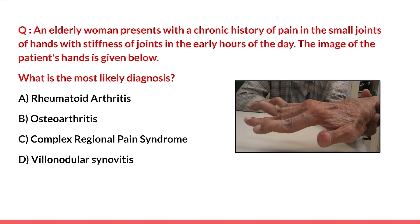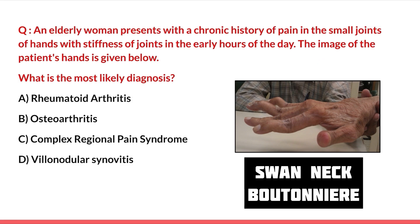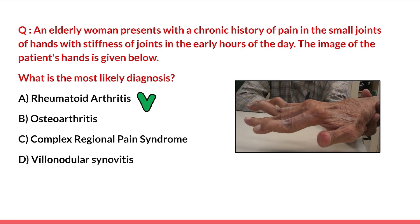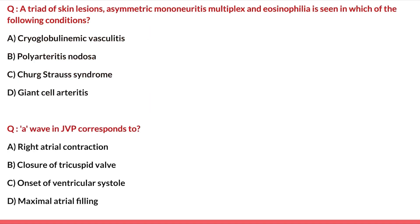The first question: an elderly woman presents with a chronic history of pain in the small joints of hands with stiffness of the joints in the early hours of the day. The image of the patient's hand is given. Options are rheumatoid arthritis, osteoarthritis, complex regional pain syndrome, and villonodular synovitis. From the history it is clear it involves small joints with morning stiffness, and the image clearly shows swan neck deformity and boutonniere deformity, which are characteristic of rheumatoid arthritis. So the best answer here is rheumatoid arthritis.